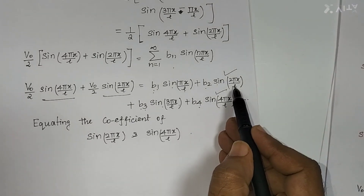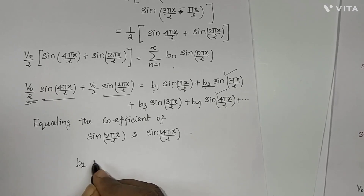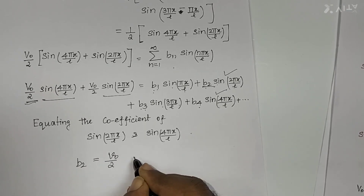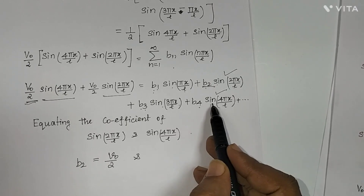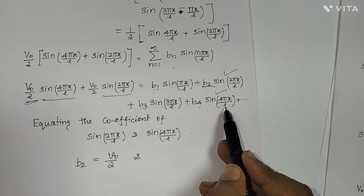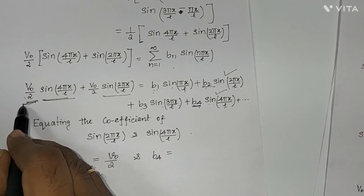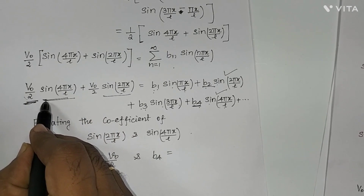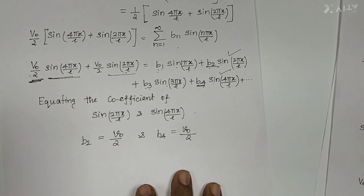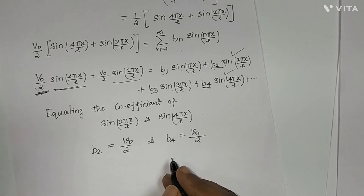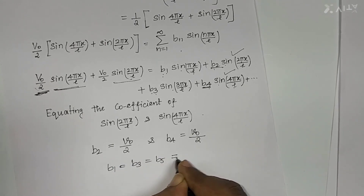Equating the coefficient of sin(2πx/L): b2 = v0/2. Equating the coefficient of sin(4πx/L): b4 = v0/2. Remaining values b1, b3, b5, and all others equal zero.